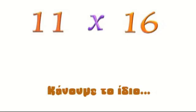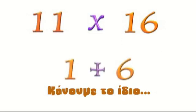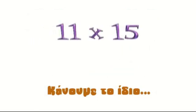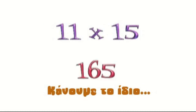Look at the two digits of 16, which are a 1 and a 6. Add the two digits — 1 plus 6 is 7. Put the 7 in the middle of the two digits of 16. Try it on your own. If you get 176, then you have the pattern down.